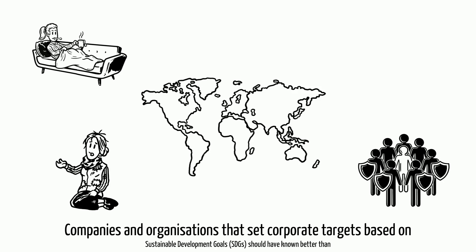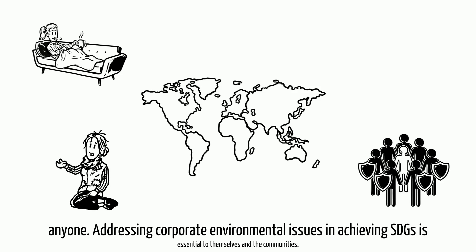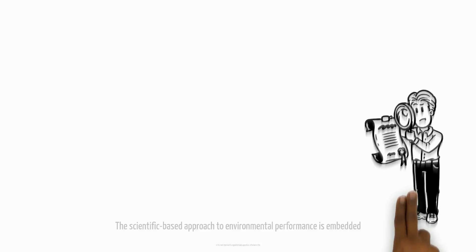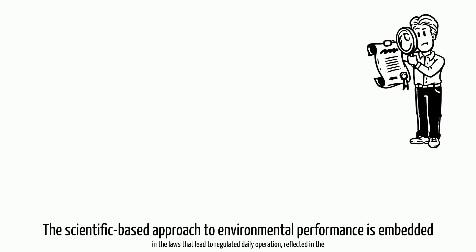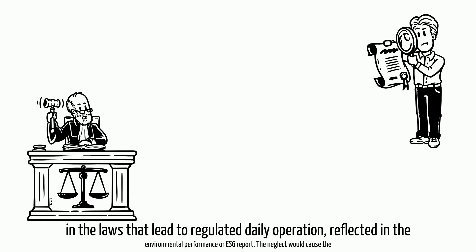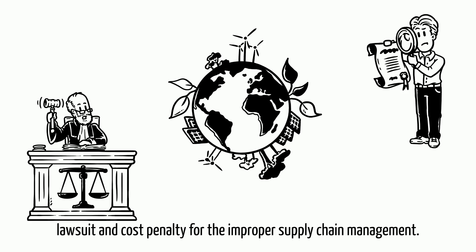Companies and organizations that set corporate targets based on sustainable development goals should have known better than anyone. Addressing corporate environmental issues and achieving SDGs is essential to themselves and the communities. The scientific-based approach to environmental performance is embedded in the laws that lead to regulated daily operation, reflected in the Environmental Performance or ESG report. The neglect would cause lawsuits and cost penalties for improper supply chain management.